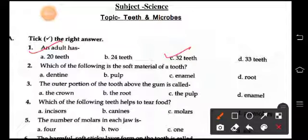Which of the following is the soft material of a tooth? Okay, pulp. The outer portion of the tooth above the gum is called the crown.